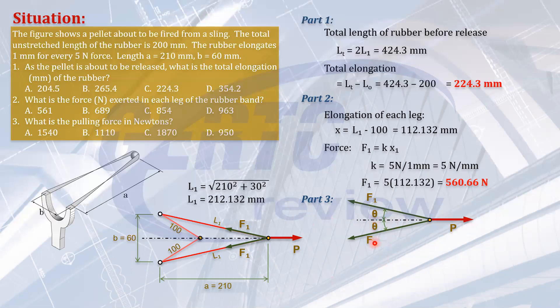Let's call that theta. So what is that angle? Theta. Tangent of theta is opposite over adjacent. The opposite is 60. The adjacent is 210. Wait, my apologies. 30 over 210. 30 over 210. So that is 8.13 degrees.